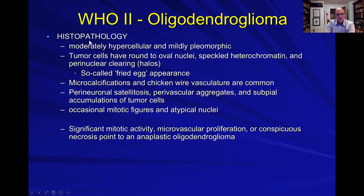Histologically, the oligo tumors are moderately hypercellular with some mild pleomorphic cells. Tumor cells have round oval nuclei, speckled heterochromatin, and perinuclear clearing — those are halos. That's what gives this the so-called fried egg appearance that you will see on your board exams.